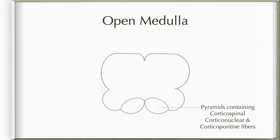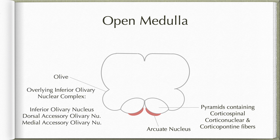Between the ventral median fissure and the ventrolateral sulcus, we have the pyramids, which are the compact fiber bundles containing corticospinal, corticonuclear, as well as corticopontine fibers at this level. These pyramids are capped by displaced pontine nuclei known as arcuate nuclei, within which these corticopontine fibers will be relaying. Between the ventrolateral and dorsolateral sulcus, we find another swelling known as the olive.